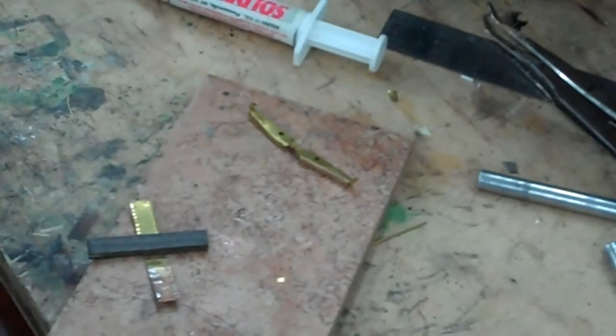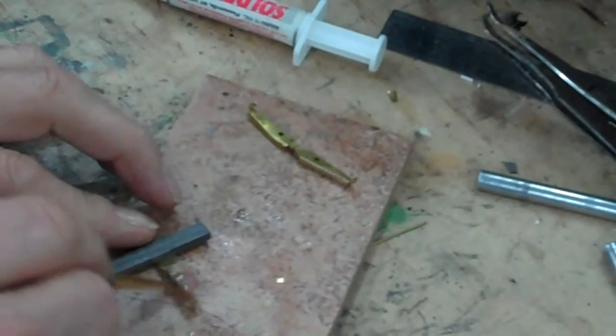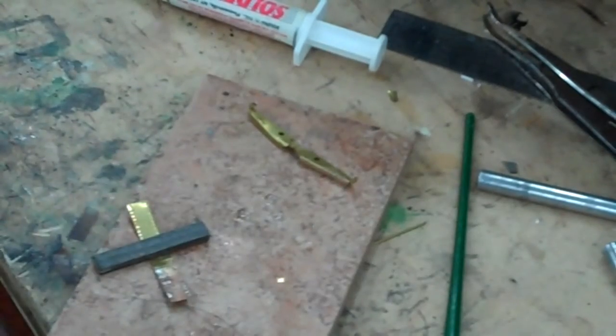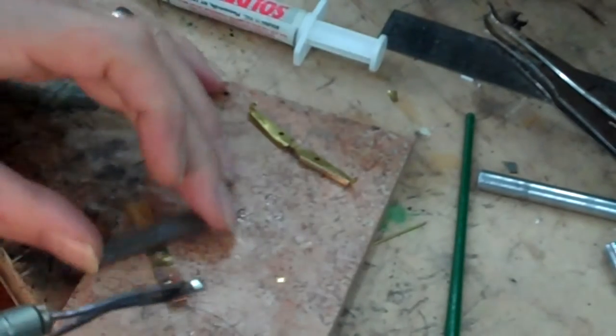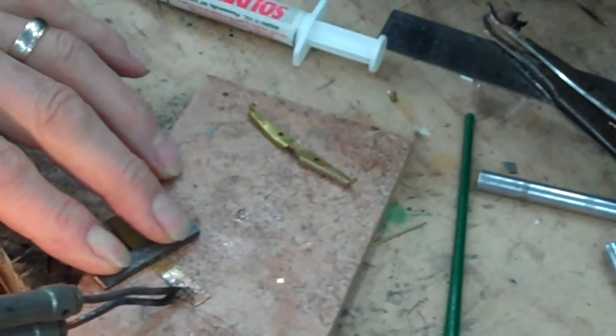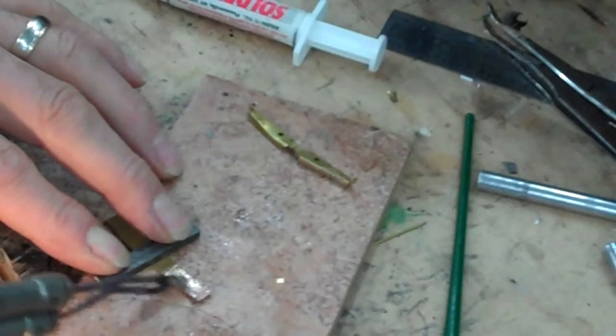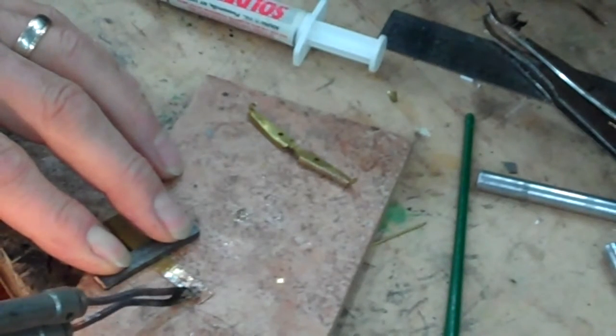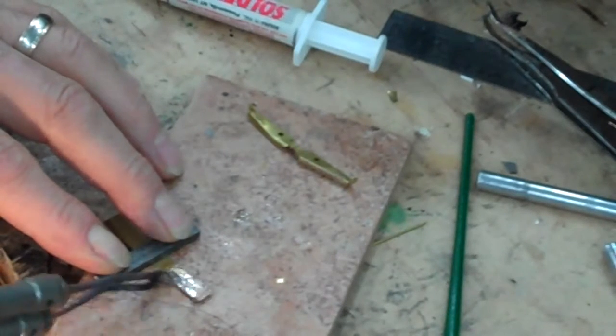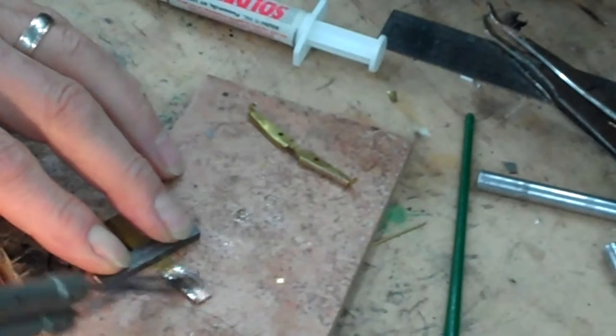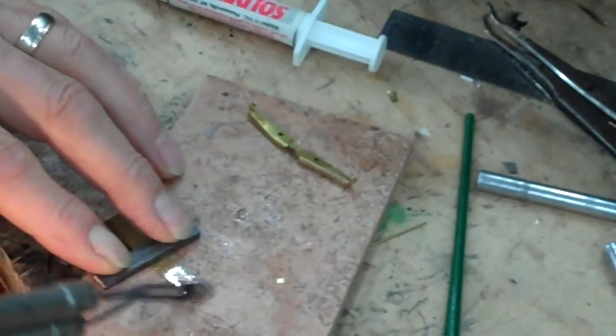First thing I want to do is try and get this piece tinned. Put a little bit of paste flux on there. Take a regular gun, get it nice and hot. And I want to get this solder spread out on both sides. I'm only going to do one side.